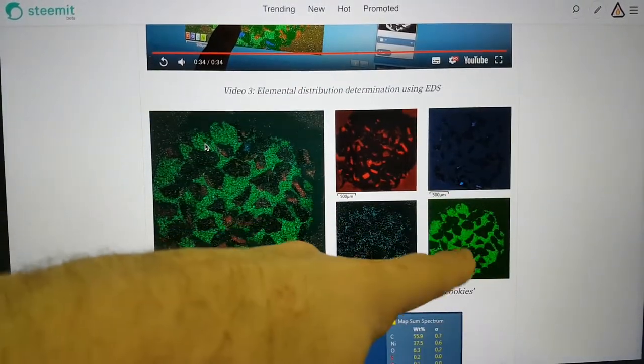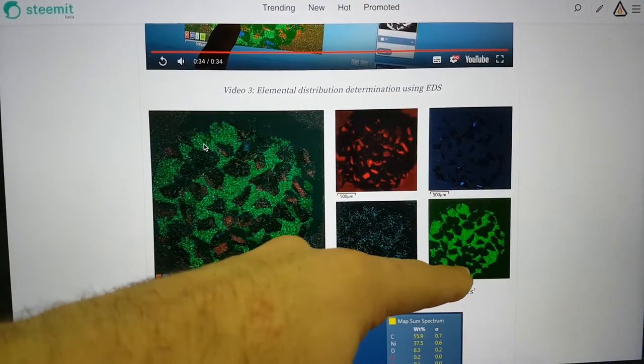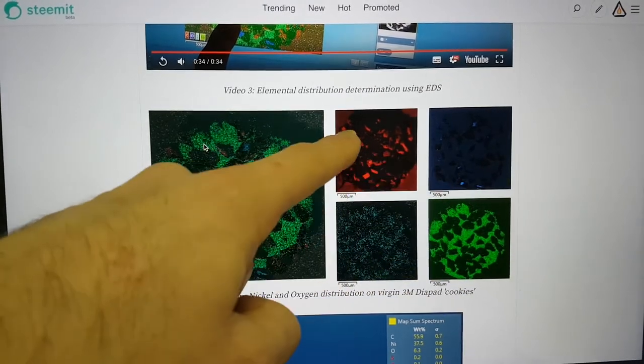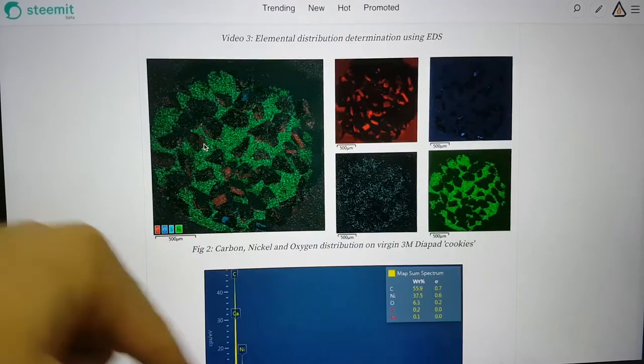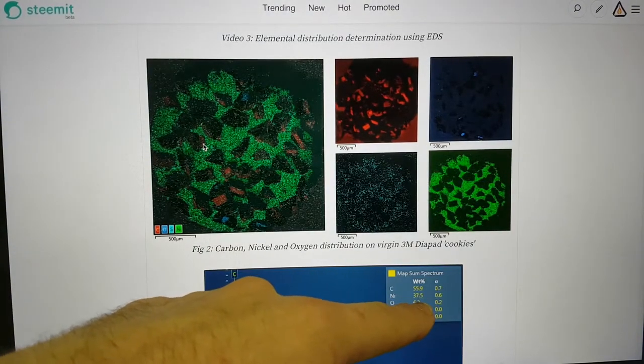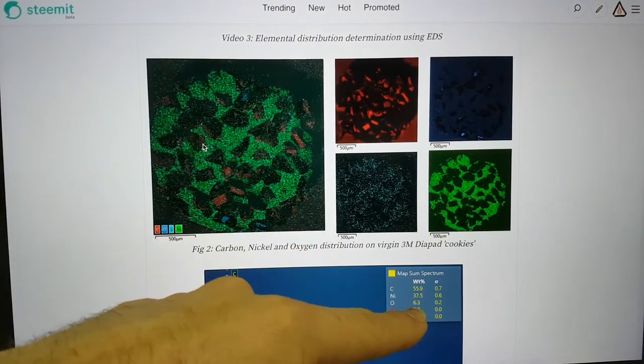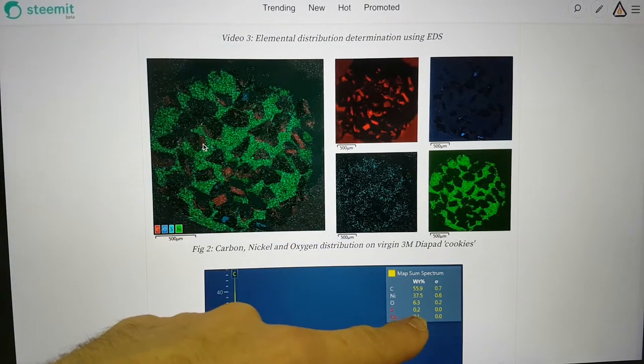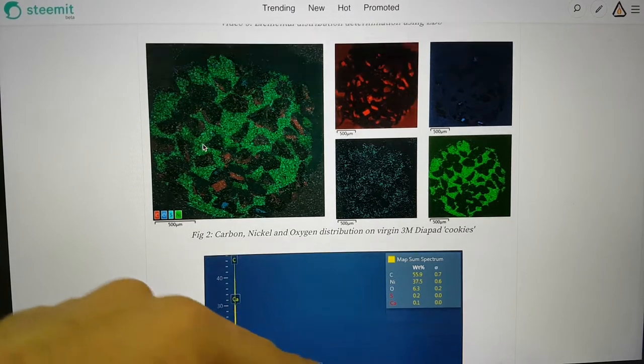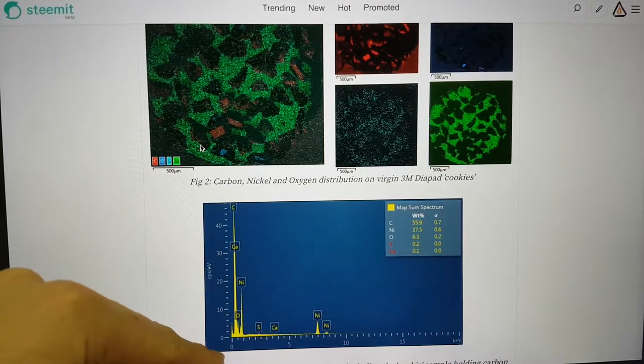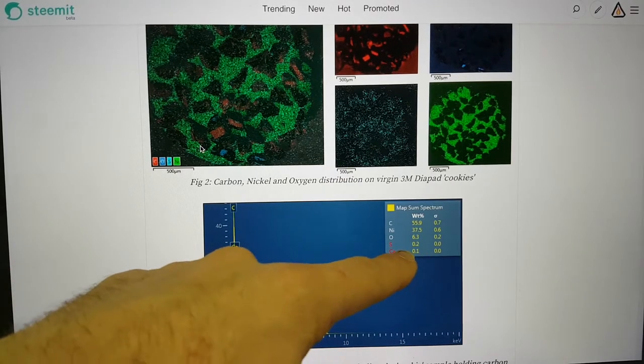You can see the nickel is basically where the bright part of the cookie is and these dark areas here are the carbon. There is some oxygen which may be on the carbon tape or on either carbon or nickel. There also appears to be some sulfur and calcium but they are below the detection ratio for confidence so the SEM marks them as red.